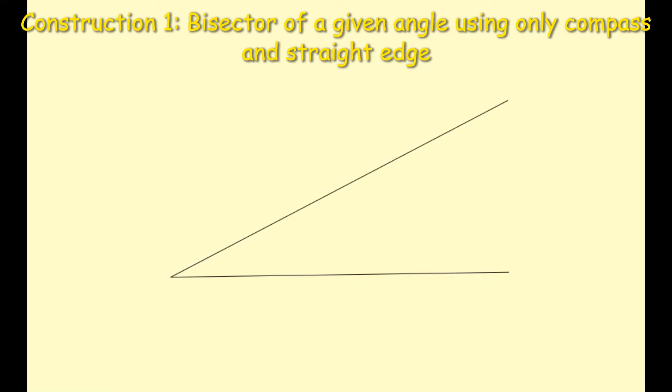An acute angle is one which is less than 90 degrees. I'm now just going to label the point A where those two line segments are meeting. So I'm constructing the angle A.